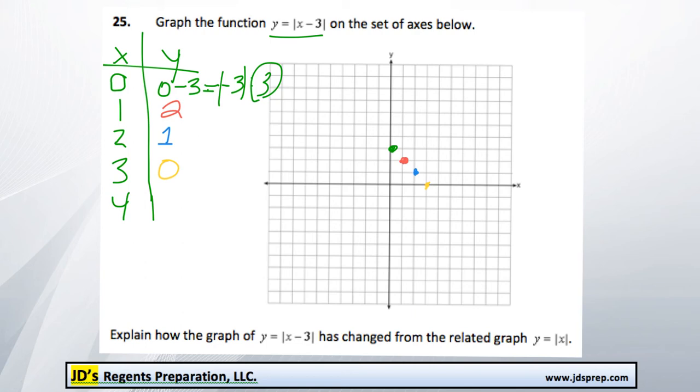After that, x is 4, 4 minus 3 is 1, the absolute value of that is still 1, so 4, 1 goes here. And we'll do one more, actually. Let's say when x is 5, 5 minus 3 is 2. So we can see the v-pattern shape forming here, so I think it's a pretty safe time to connect our dots here. From here to here.